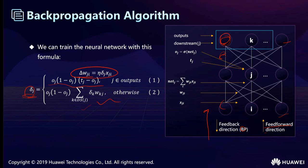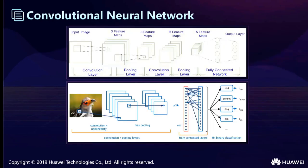We calculate the delta W and update the parameters of the surface, getting our output values closer to the desired values. Now we have learned the basic neural networks: the fully connected neural network, feed-forward, and backpropagation as the way to update parameters.